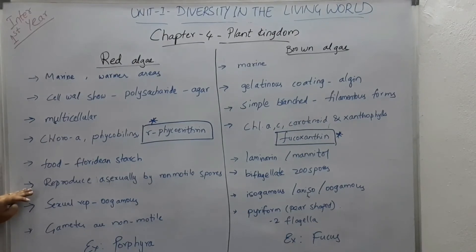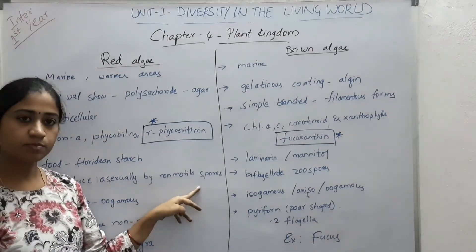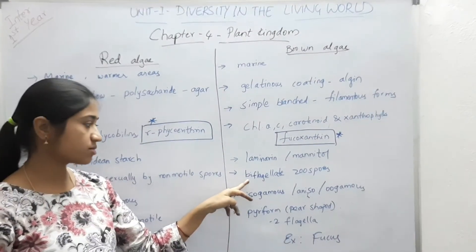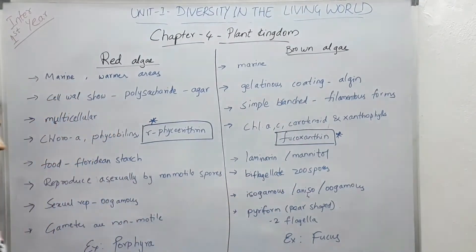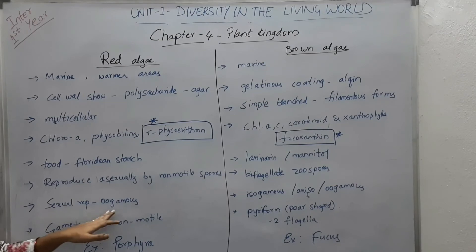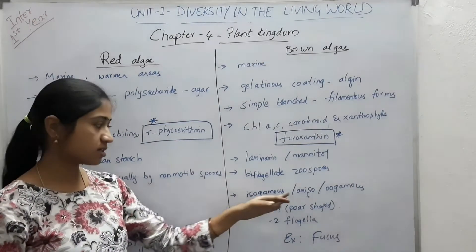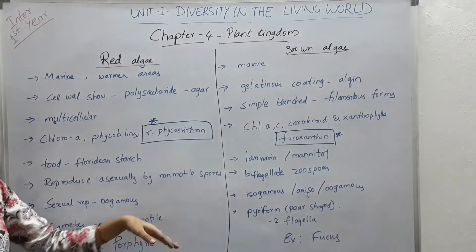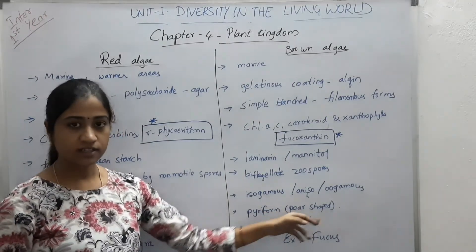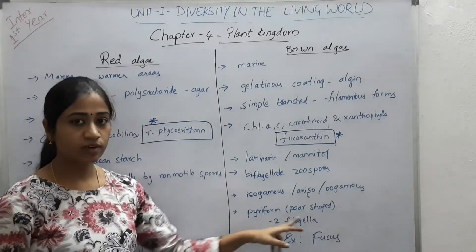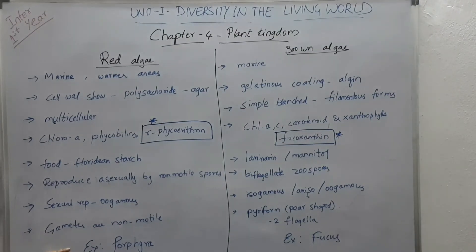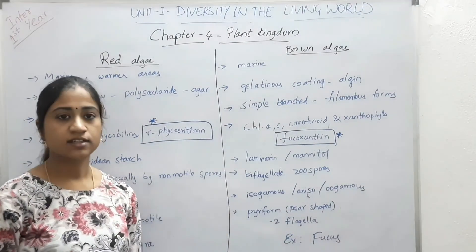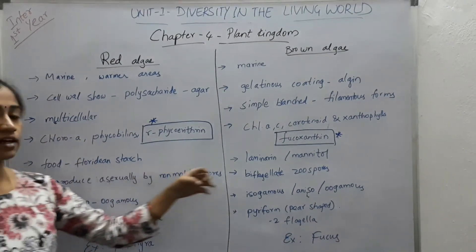Regarding reproduction: in red algae, asexual reproduction occurs by non-motile spores, and sexual reproduction is oogamous. In brown algae, asexual reproduction takes place through biflagellate zoospores, and sexual reproduction may be isogamous, anisogamous or oogamous. In red algae the gametes are non-motile, while in brown algae the gametes are pear-shaped and bear two flagella. An example for red algae is Porphyra and for brown algae is Fucus.